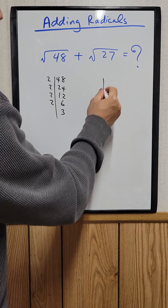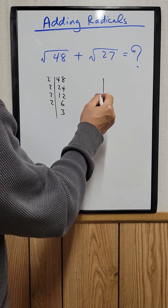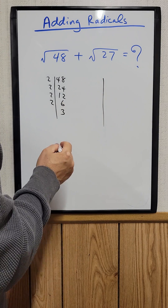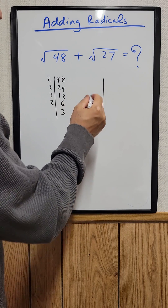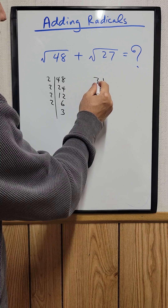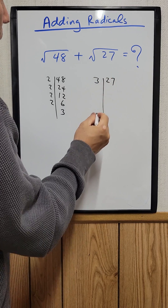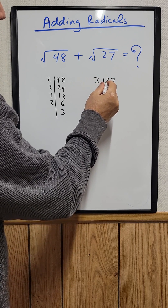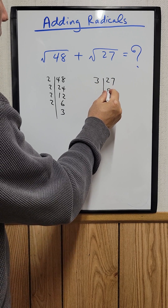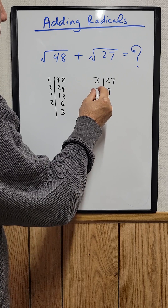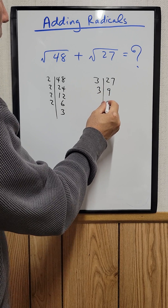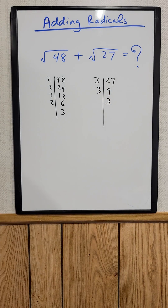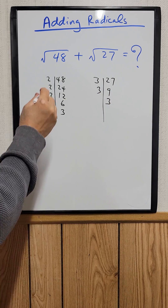And now I'm going to find the factors for 27. 27 can be divided by 3, so 27 divided by 3 would be 9. And 9 divided by 3 would be 3. So that's all the factors right here.